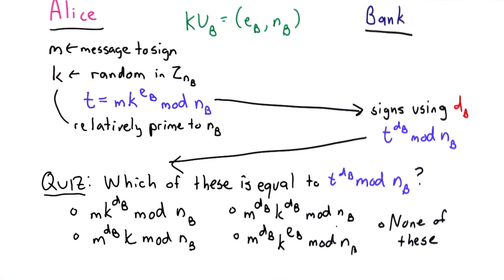So the question is which of these is equivalent to the value produced by the bank? Here are the choices. To answer this question, think about the properties of RSA.